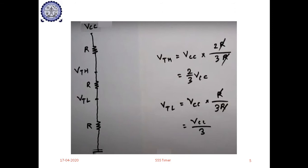Looking at the internal block diagram, there are three identical resistors, each one of them being 5 kilo ohms. That is why the name is called 555 — or triple five — because this resistance value is 5k, 5k, and 5k. These resistance values are constant, and because of these identical resistance values, the circuit is labeled as triple five. Since it generates a delay, it is called a timer.